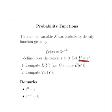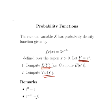The questions are: compute the expected value of y, which is the expected value of the exponential of x, and also compute the variance of y. Two identities to note now: e to the power of 0 is equal to 1, and e to the power of minus infinity is essentially equal to 0. We're going to use these quite a lot in this presentation.